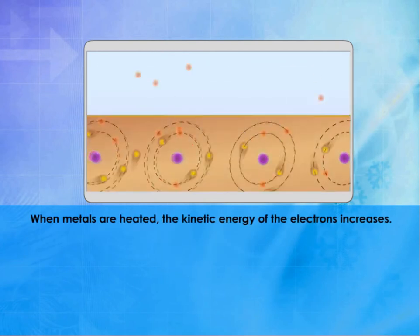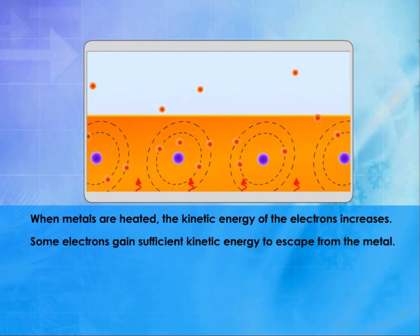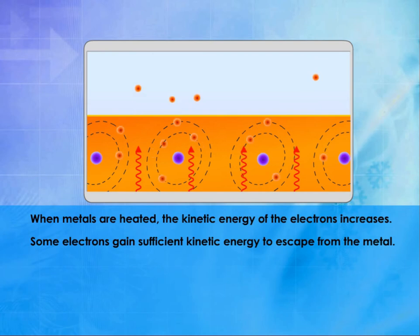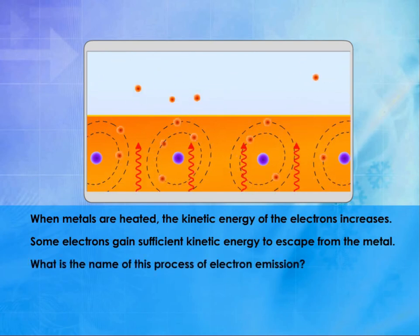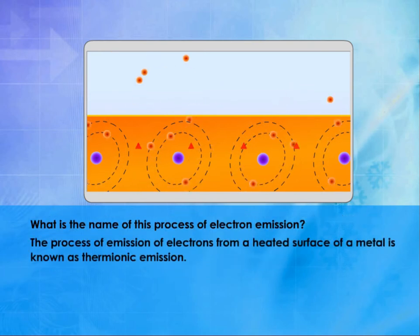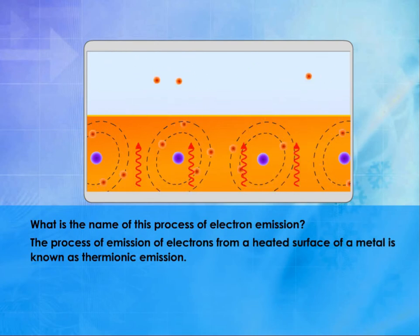When metals are heated, the kinetic energy of the electrons increases. Some electrons gain sufficient kinetic energy to escape from the metal. The process of emission of electrons from a heated surface of a metal is known as thermionic emission.